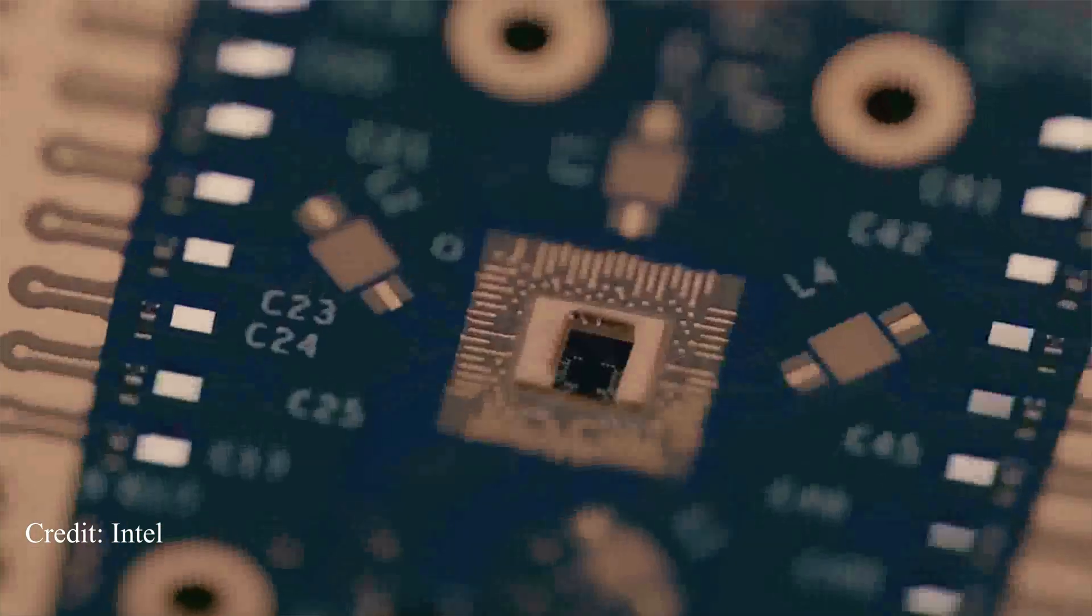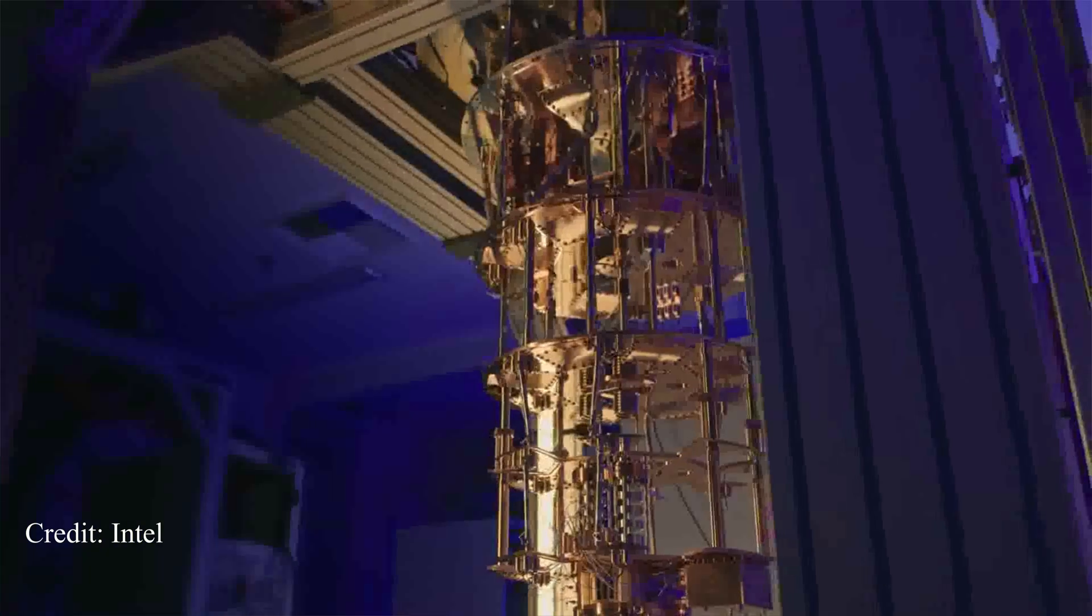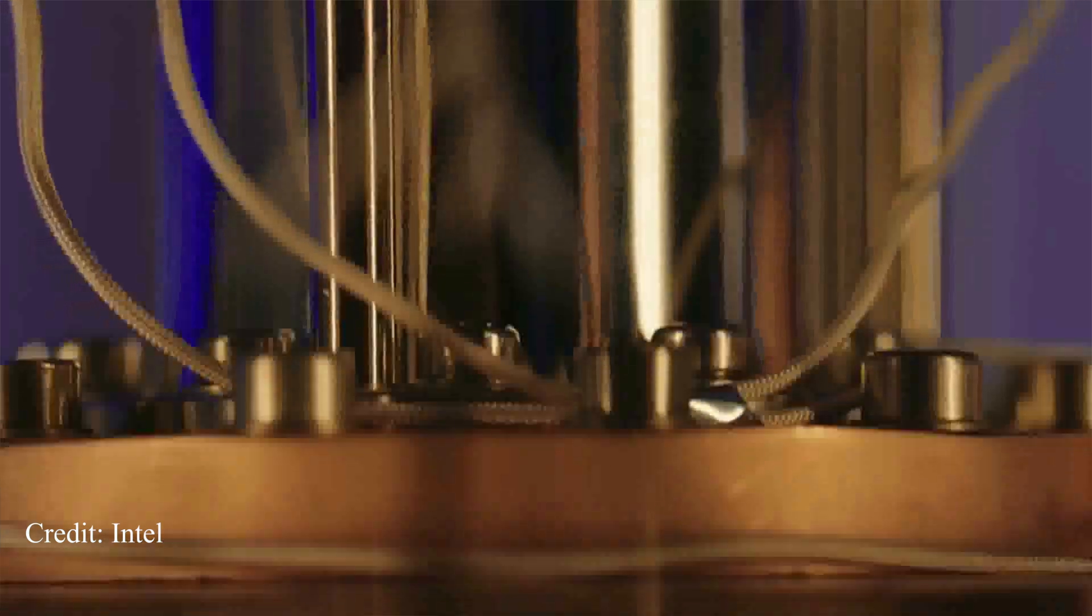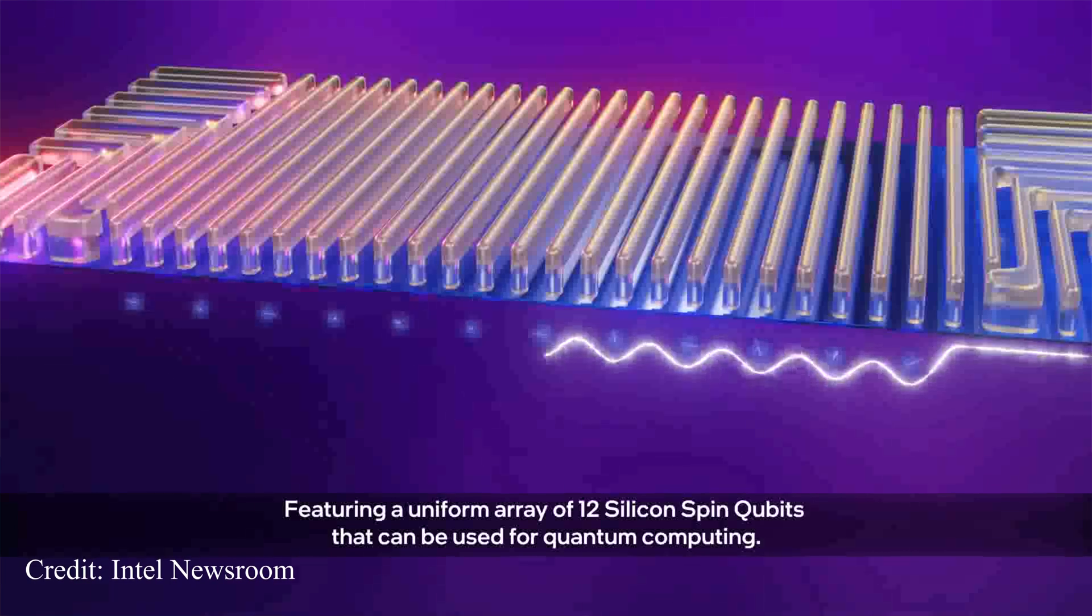Of all quantum computing technologies that are currently in the quantum race, quantum dots are probably the most similar to transistors that we find in microchip processors. At its core, a quantum dot is a semiconductor-based device that confines single or few electrons at a site for quantum operations. The electron spin states make for good qubits.